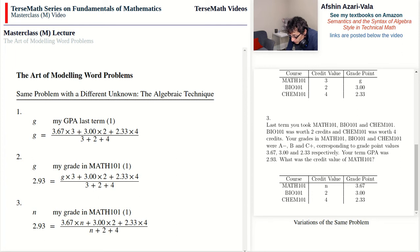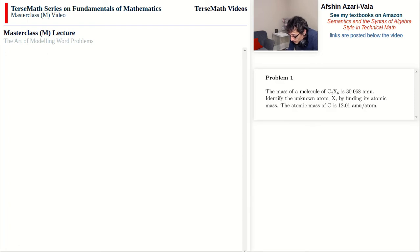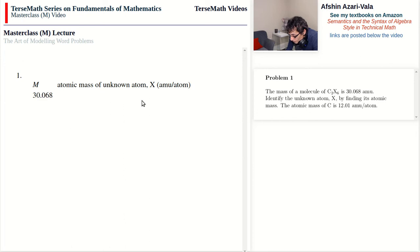First, problems where total equals sum of parts. Problem 1: the mass of a molecule of C₂X₆ is 30.068 amu. Identify the unknown atom X by finding its atomic mass. The atomic mass of C is 12.01 amu per atom. With M representing the atomic mass of X in amu per atom: 30.068 = mass of two carbon atoms + mass of six X atoms, i.e., 30.068 = 2(12.01) + 6M.